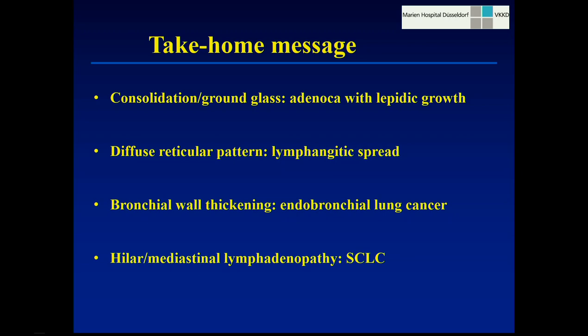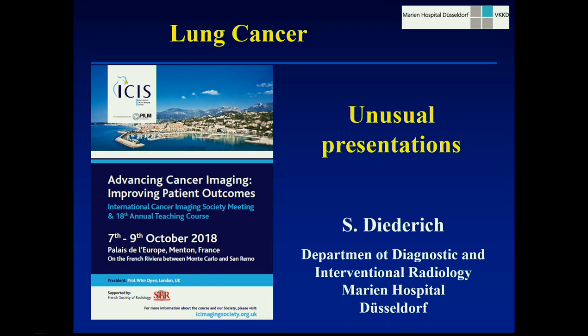As take-home messages from this case series: if you see consolidation and ground glass widespread reminding of pneumonia, it may represent adenocarcinoma with lepidic growth. A diffuse reticular pattern may be due to very diffuse lymphangitic spread, and you have to look for the underlying tumor, which usually should be detectable on chest CT. In bronchial wall thickening making you think of chronic bronchitis, look for a tiny endobronchial lesion — usually squamous cell carcinoma or small cell carcinoma. And if you think you're dealing with lymphadenopathy only, think of small cell lung cancer, with the differential being non-Hodgkin's lymphoma. With this, I'm through, and I thank you for your attention.